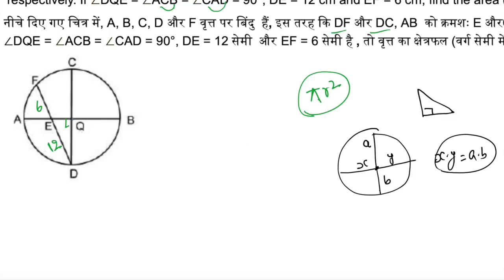Say this is our center. Two diameters always intersect at the center. Say QB is R. Say this one is X, so the complete AQ is R minus X. The radius is R, and OQ is also R. Assume EQ is X, so this one is R minus X. Working in triangle DQE by Pythagoras, this is also R because it is the radius. So R squared plus X squared equals 12 squared, which is 144.